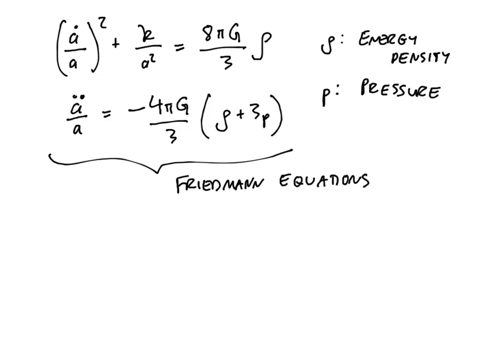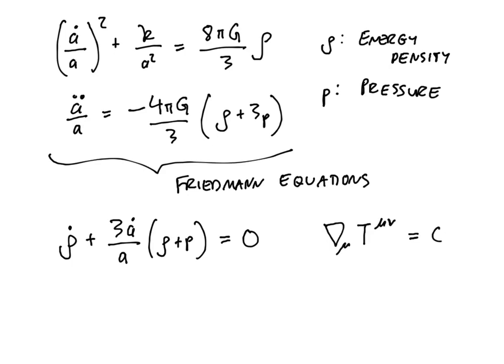There is one more equation you can derive by taking the derivative of the first Friedmann equation and combining it with the second. This tells you how the energy density evolves with time. It turns out this is implied by conservation of the stress-energy tensor, so it is sometimes called the conservation equation.